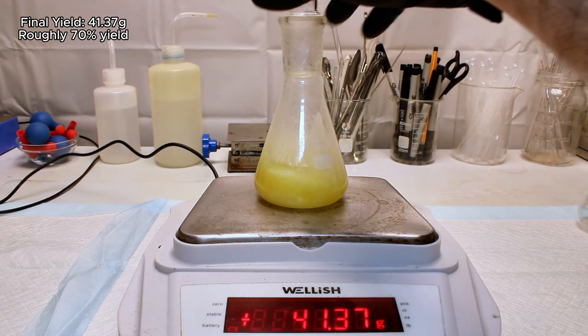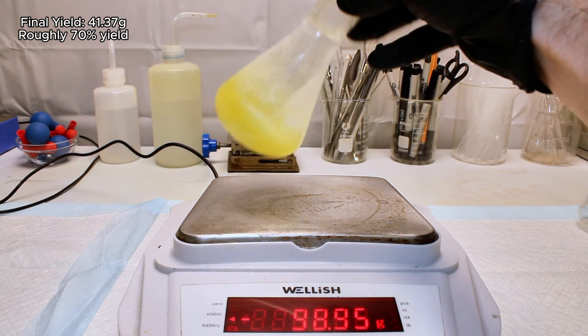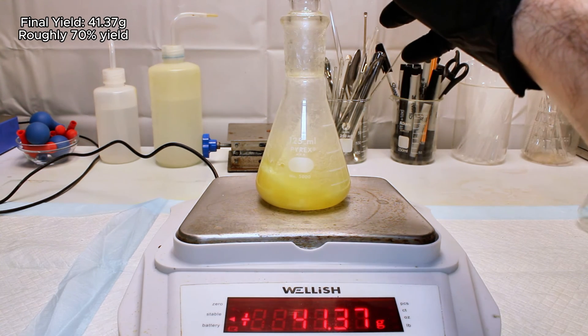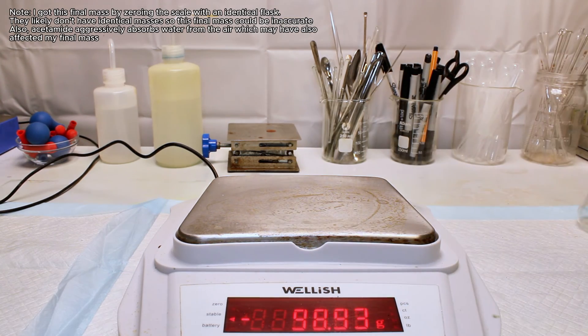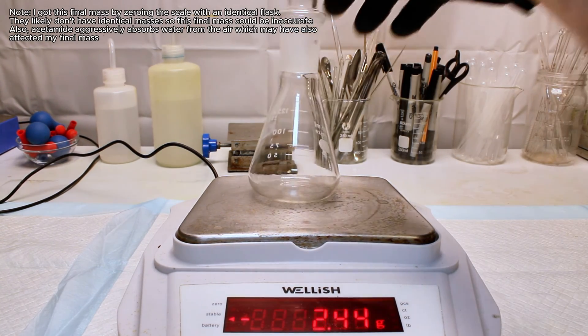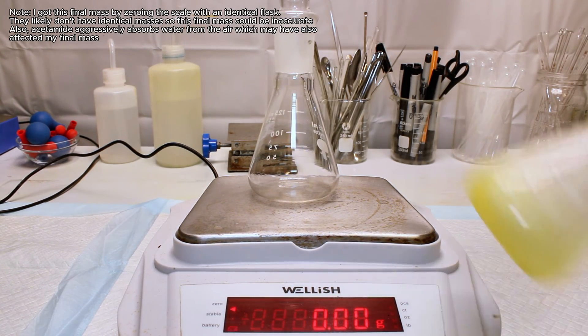In the end, I got a yield of 41.37 grams of visibly impure acetamide, which represents around a 70% yield. This probably could have been a bit better if I bothered distilling everything out of my boiling flask, but again I was a bit afraid it would crack due to heat stress.